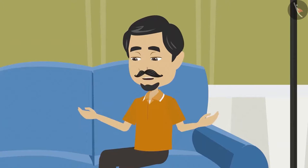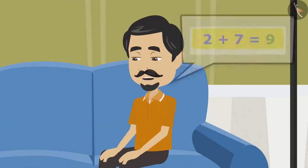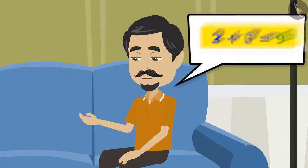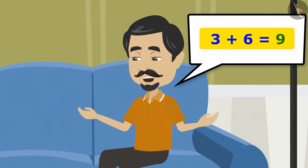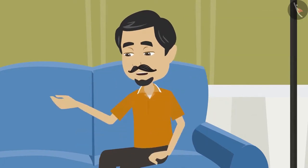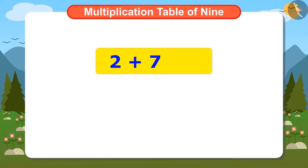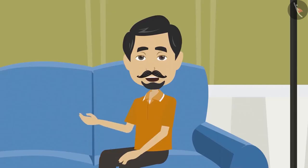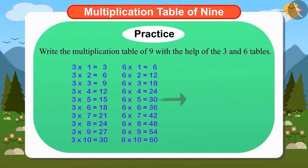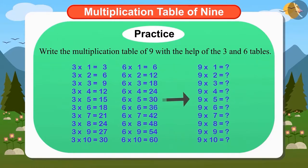But do you know, apart from 2 and 7, you can find the 9th table with 3 and 6. See, like adding 2 and 7 gives the answer 9. Similarly, adding 3 and 6 gives the answer 9. Children, can you try writing the table of 9 from 3 and 6?